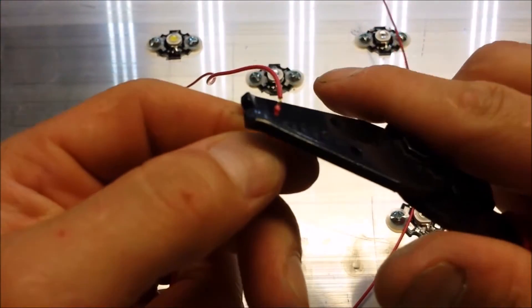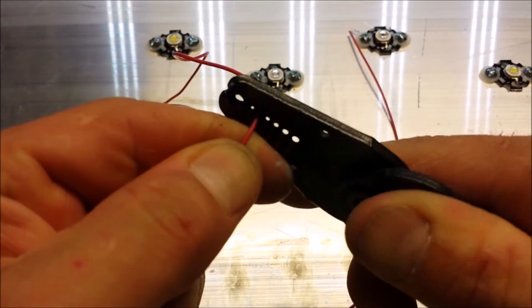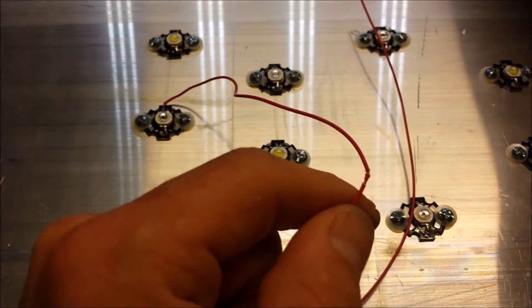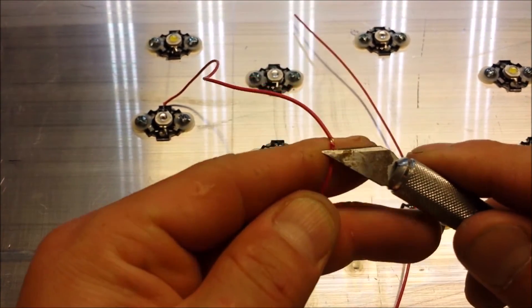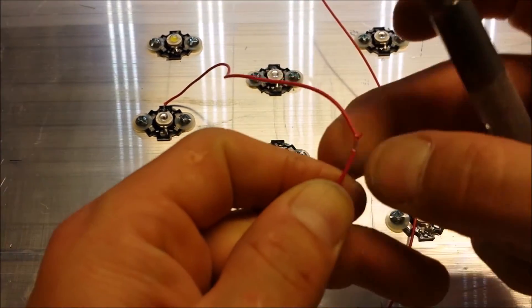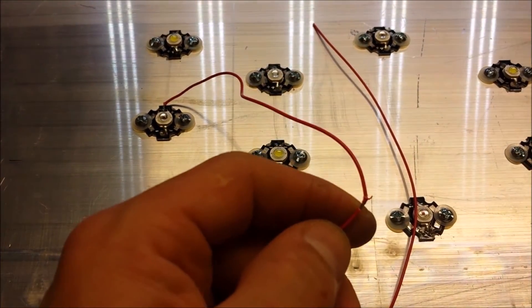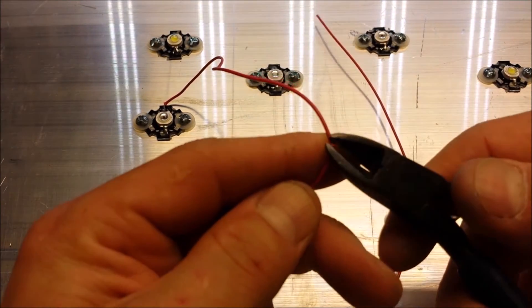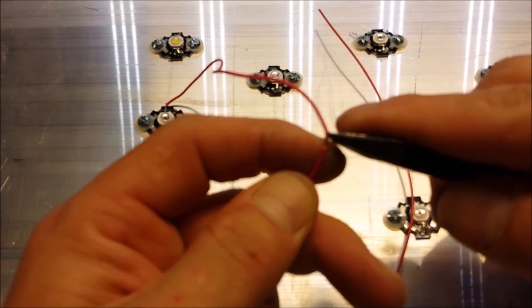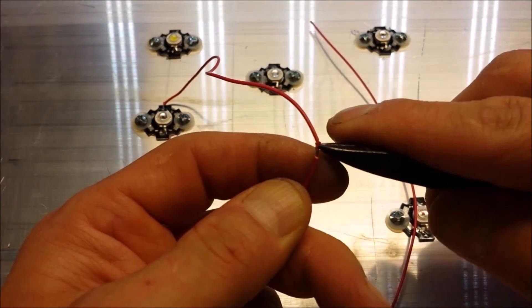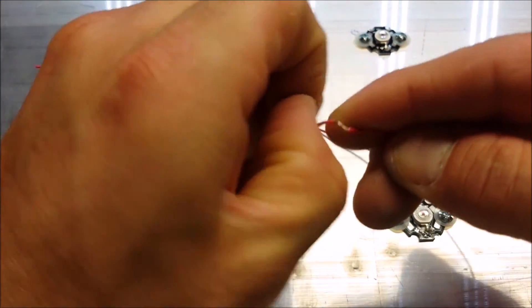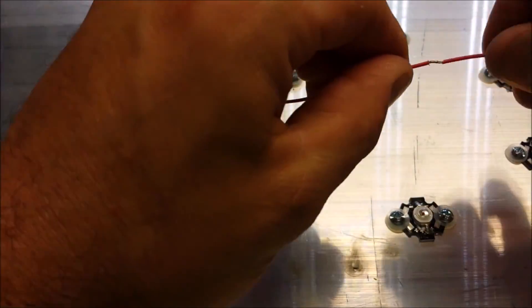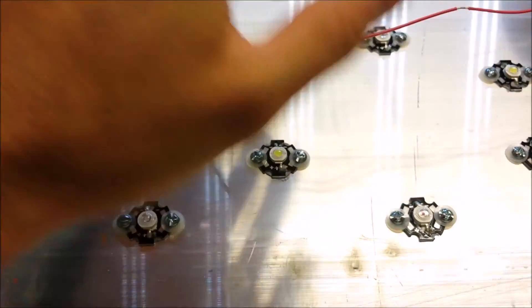Now sometimes what you can do is then re-strip this, and then take a little X-Acto knife here and just slice that insulation out from the middle. Just like that. And then what you're left with is a nice wire that you can now tin.